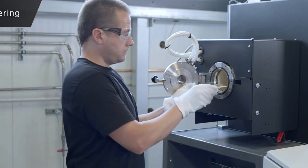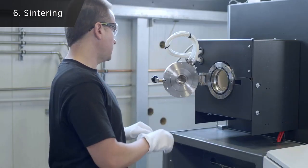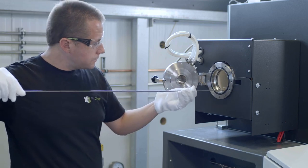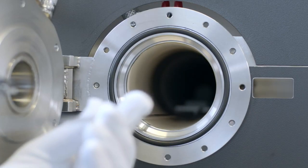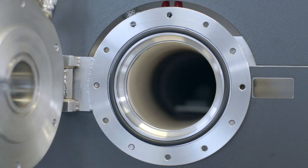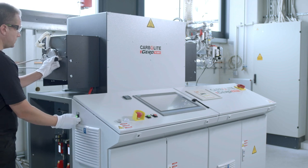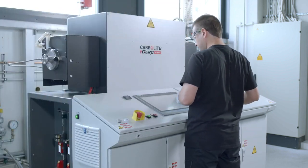Sintering is the final key step in the metal binder jetting process chain. Through heat treatment in the furnace, final parts achieve high-quality microstructures with densities greater than 97%. Our expert team continuously works on optimizing the printing and sintering process while testing new materials to ensure that our customers receive reliable, reproducible and predictable parts at every step of the process.